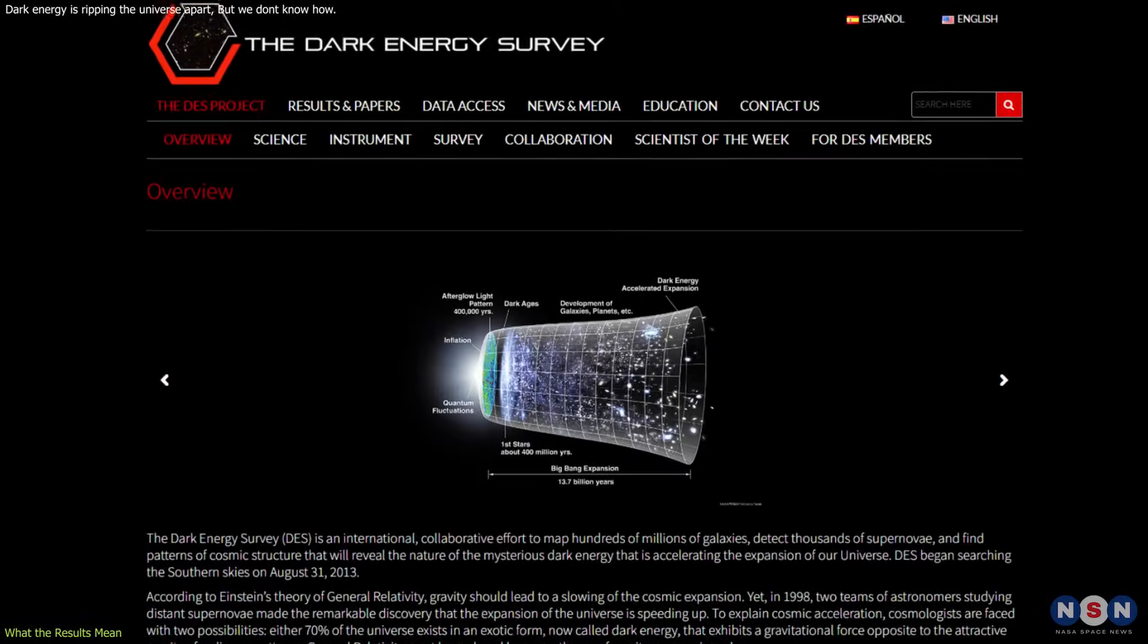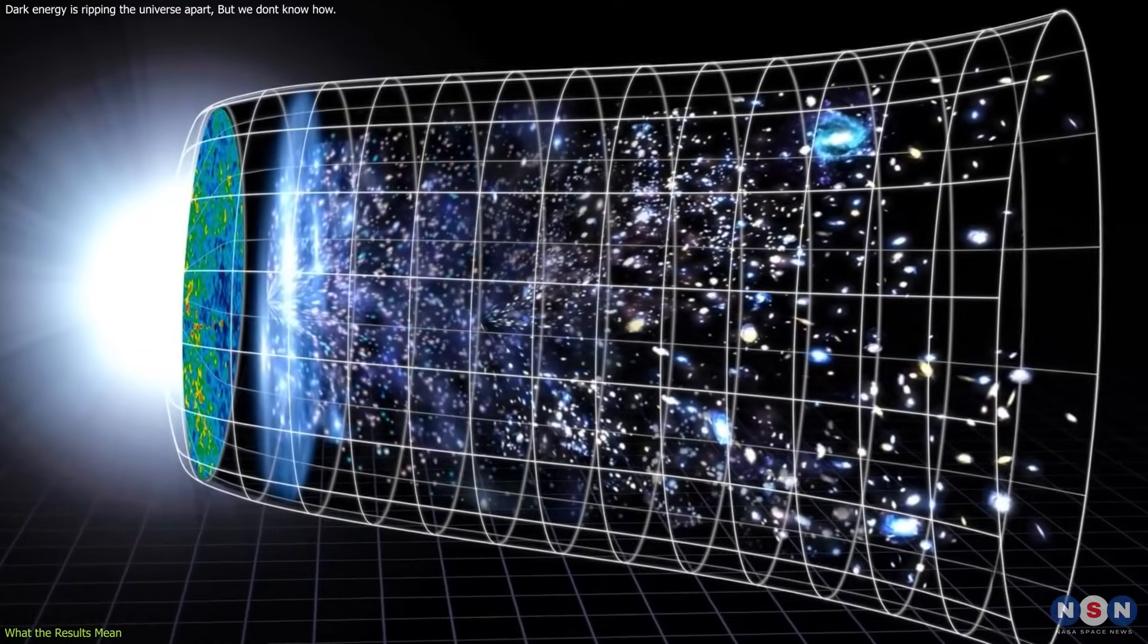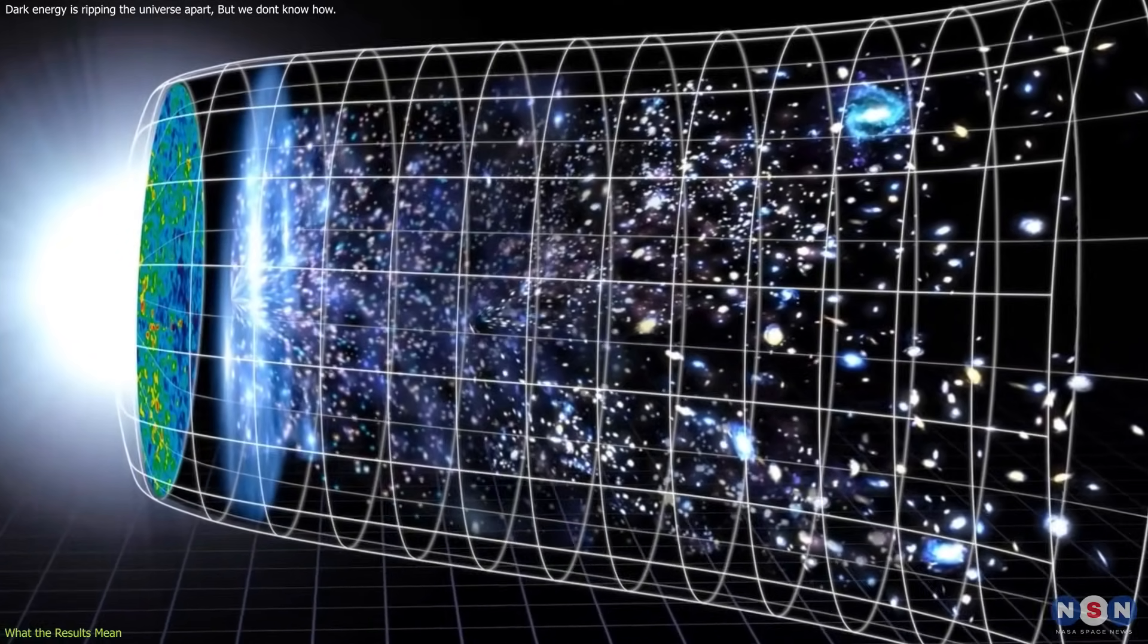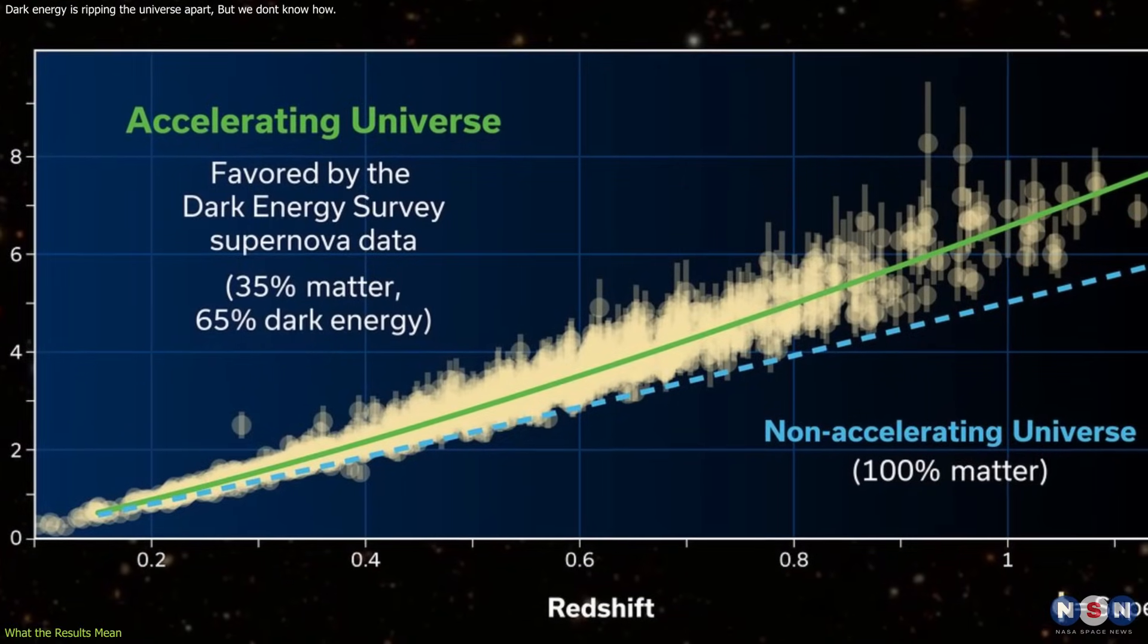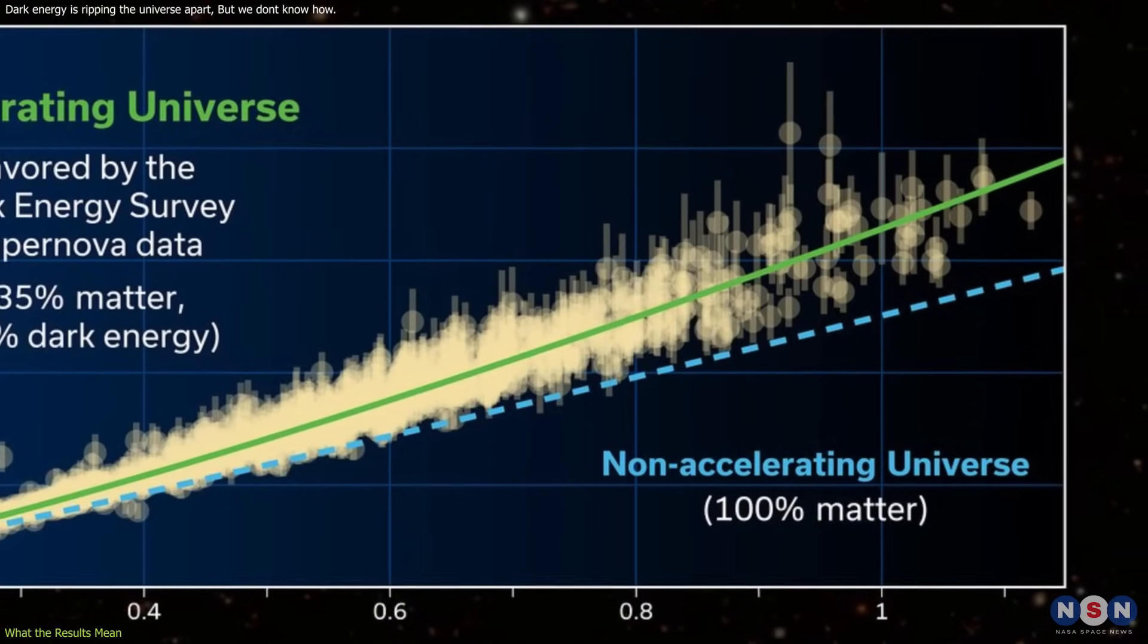The results of the DES study are consistent with the predictions of the Lambda-CDM model within the uncertainties of the measurements. This means that the model is able to explain the data from the DES and other experiments with high accuracy and precision.